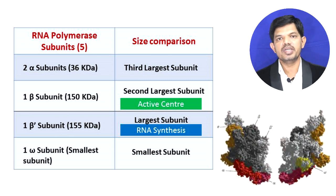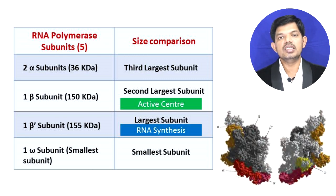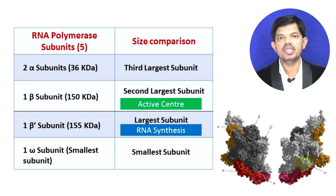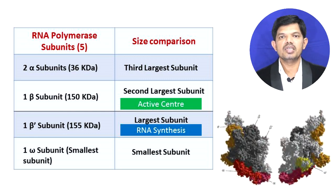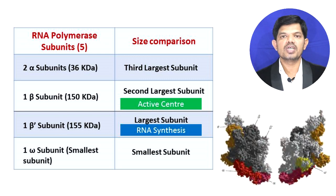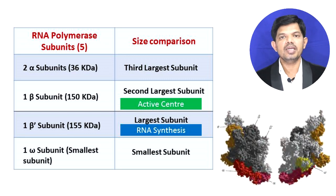The beta dash subunit has a molecular weight of approximately 155 kilo Dalton and plays the actual role during RNA synthesis. The beta subunit is the second largest subunit and acts as the active center in RNA polymerase. The remaining two alpha subunits are the third largest subunits found in RNA polymerase.